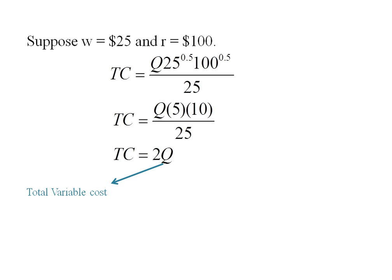This is our total variable cost. In the long run there are no fixed costs, so my total cost in the long run is the same as my total variable cost.